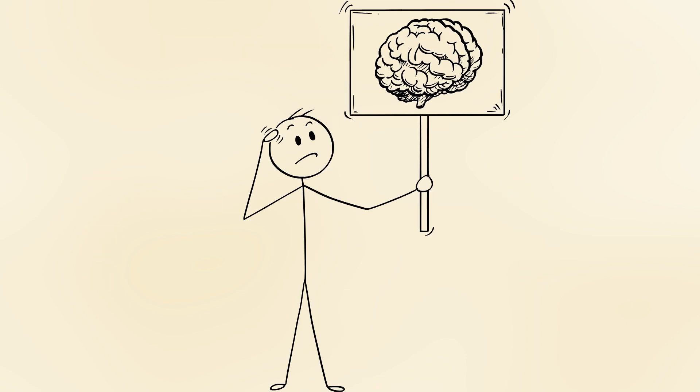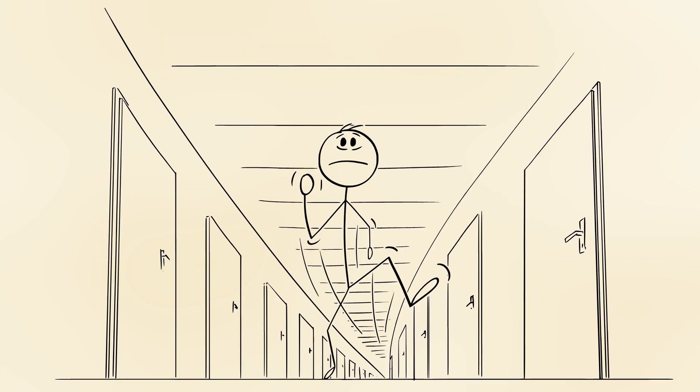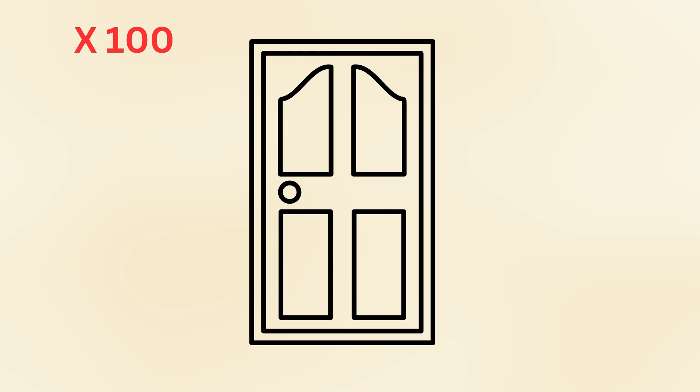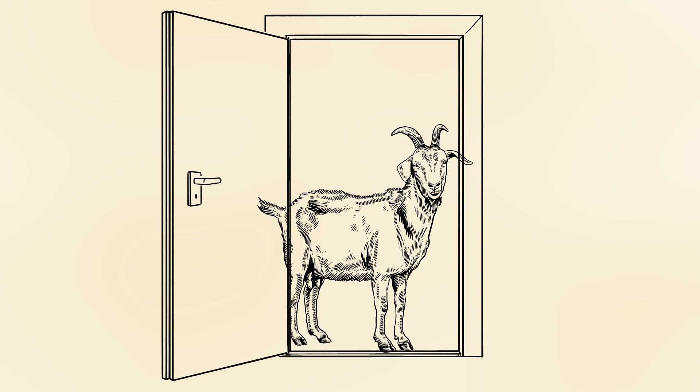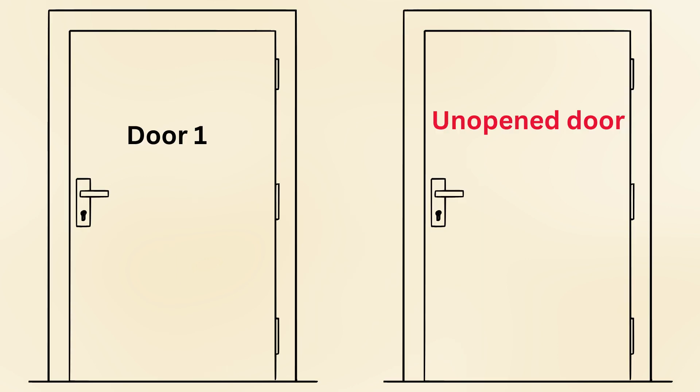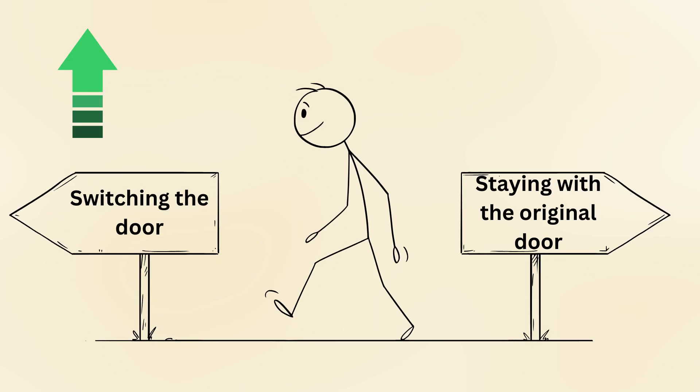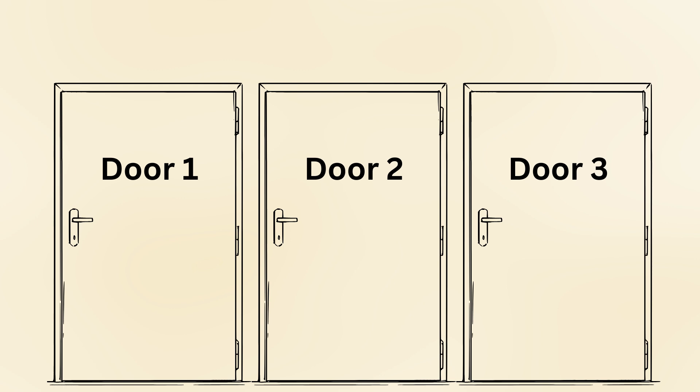Another way to understand this is to imagine a scenario with more doors. Suppose there were 100 doors instead of 3. You choose one door, and then the host opens 98 doors, all revealing goats. Now you are left with your initial door and one other door. In this case, it becomes even clearer. Your original choice had a 1-100 chance of being correct, while the other door now has a 99-100 chance. This extreme example highlights how switching dramatically improves your odds, and the same logic applies even when there are only three doors.